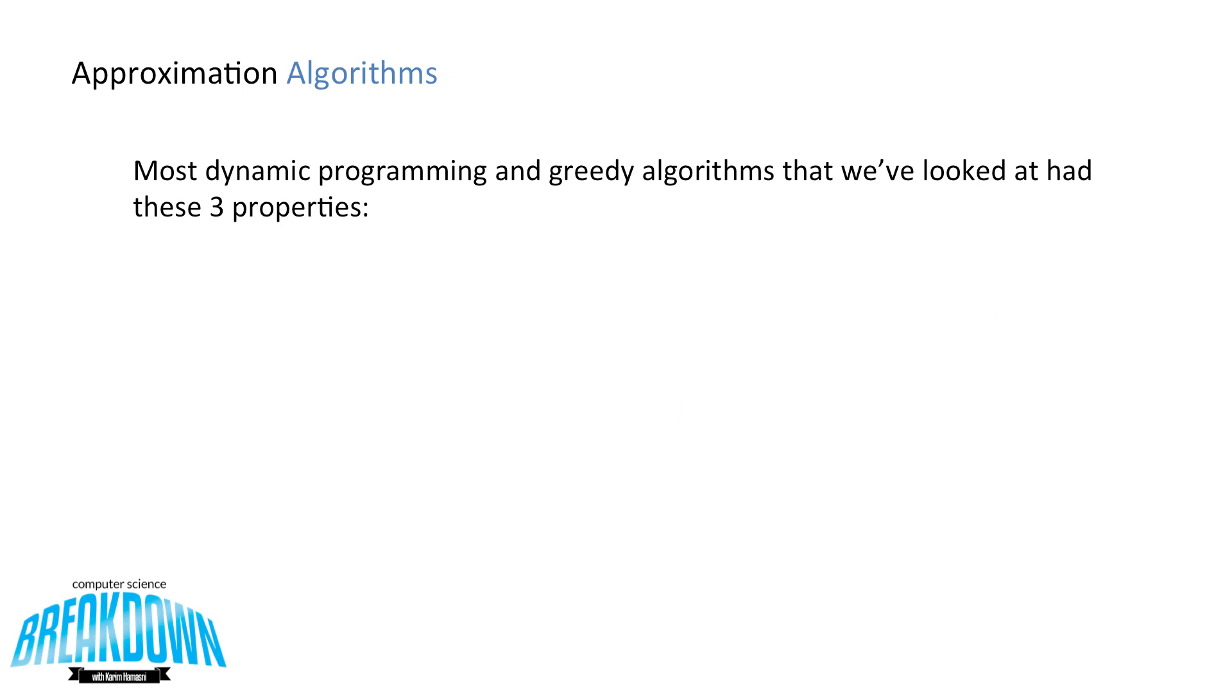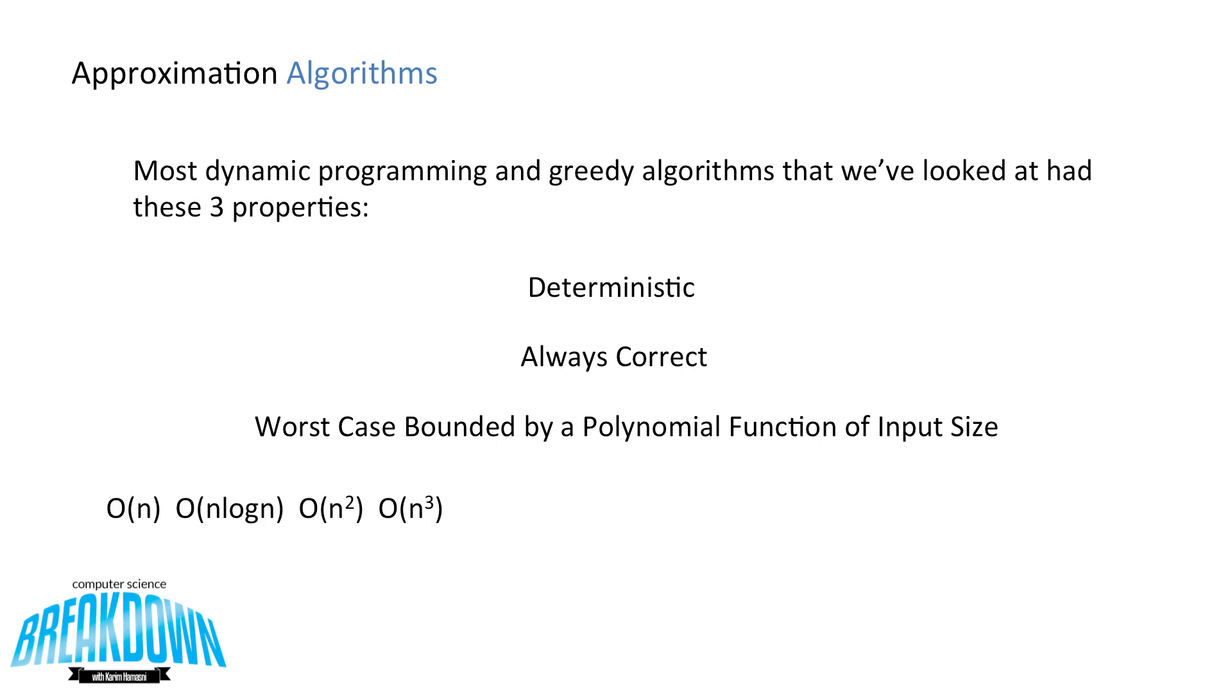So far in this video series here at CS Breakdown, most of the dynamic programs and greedy algorithms that we've looked at had these three properties: they were deterministic, they were always correct, and the worst case was bounded by a polynomial function related to its input size. So we've looked at algorithms that had complexities like big O(n), big O(n log n), big O(n²), and big O(n³). But what about problems that have the complexity like big O(2^n), or worse, big O(n!)?